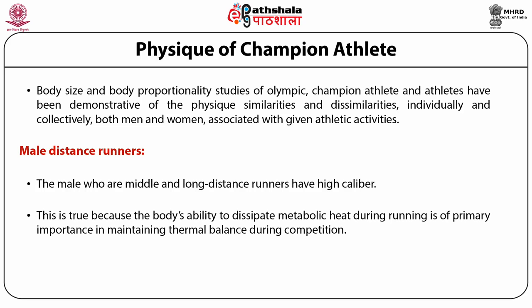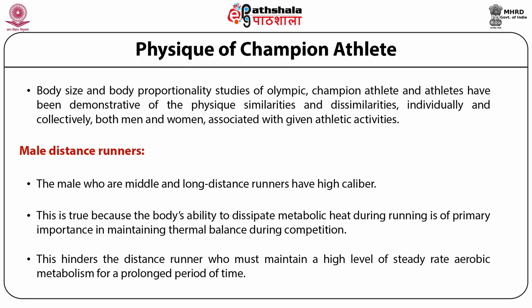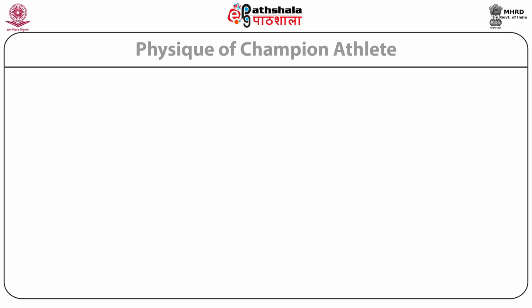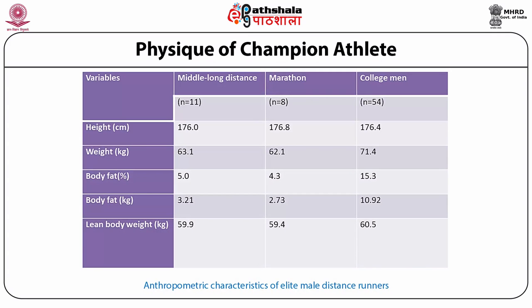This is because the body's ability to dissipate metabolic heat during running is of primary importance in maintaining thermal balance during competition. Excess fat prevents heat dissipation. Also, the excess fat of the body — as dead weight — is added directly to the energy cost of running, which hinders the distance runner who must maintain a high level of steady-rate aerobic metabolism for a prolonged period of time. Elite distance runners are smaller in circumference distances and bone diameters, and these characters are inherited. The best distance runners inherit a physique that is slight of build in terms of height and skeletal dimensions.